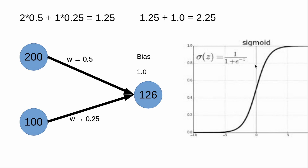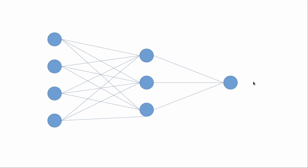Here we have four inputs and one output. The first layer is the input layer, the last layer is the output layer, and what is in the middle is called the hidden layer. We put our input in these nodes, multiply by weights, sum all the values, add the bias, put it into the activation function to get a value for each node, then multiply those values by the next weights to calculate the output.